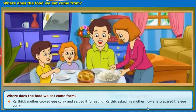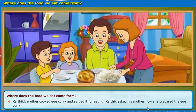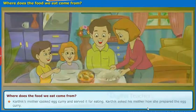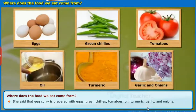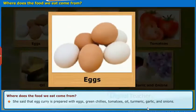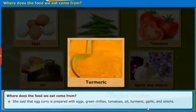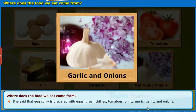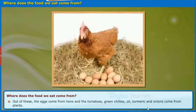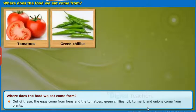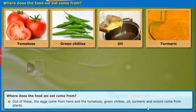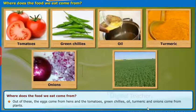Karthik's mother cooked egg curry and served it for eating. Karthik asked his mother how she prepared the egg curry. She said that egg curry is prepared with eggs, green chilies, tomatoes, oil, turmeric, garlic, and onions. Out of these, the eggs come from hens, and the tomatoes, green chilies, oil, turmeric, and onions come from plants.